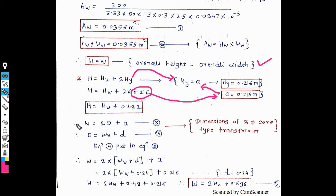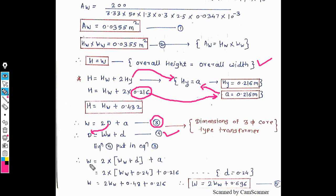Applying the condition H = W: Hw + 0.432 = 2Ww + 0.696. Rearranging gives Hw = 2Ww + 0.264. This is equation 6. Substituting equation 6 into the area of window equation 2: (2Ww + 0.264) × Ww = 0.0355, which expands to 2Ww² + 0.264Ww = 0.0355. This quadratic is then solved for Ww.